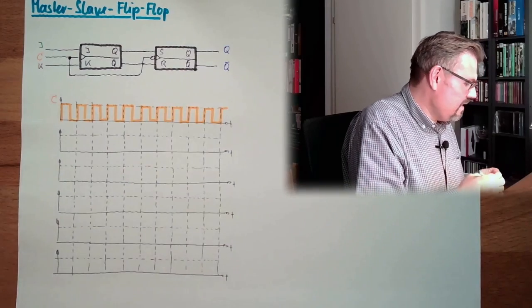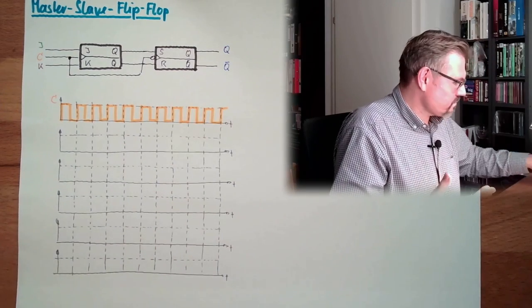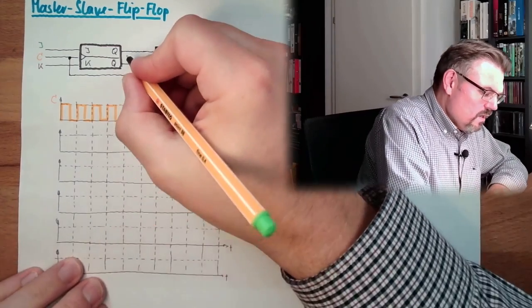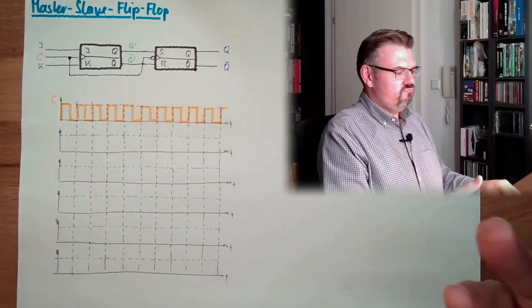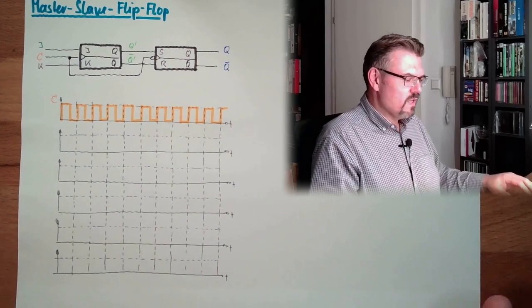And here is the real output of this Master-Slave combination Q and not Q. And in here, we have an internal state. Internal state. I call it Q' and not Q'.